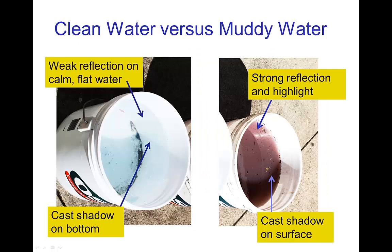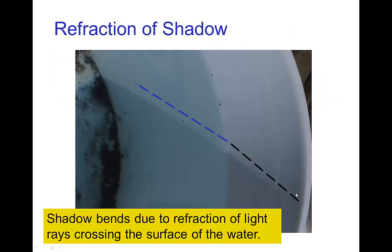Here are some photos taken in the backyard. This first bucket has clean, clear water and there is no shadow on the surface — the cast shadow extends down to the bottom of the bucket. There's also only a very weak reflection from this clean water. The murky muddy water, on the other hand, has a rather strong reflection — you can see a highlight, which is the reflection of the top rim of the bucket — and there is a significant cast shadow on the surface of the water as well. If you look carefully at the bucket with the clean water, the shadow is actually bent because light is bent by refraction when it enters the water, and we have a similar bending of the shadow. We'll talk more about refraction in other tutorials.